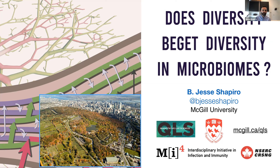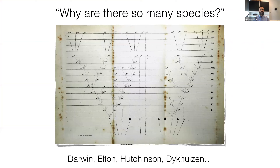The question I'm going to be asking today is an old one: why are there so many species? Why is it that some lineages produce more species than others? What controls all of this diversity? This is a question that has been asked by Darwin, Elton, Hutchison in a more bacterial context, and more recently by Dijkhausen and hopefully many of you as well.